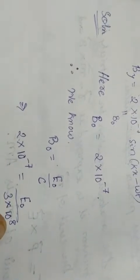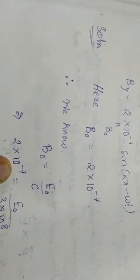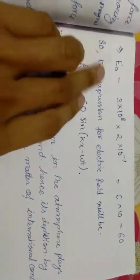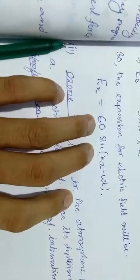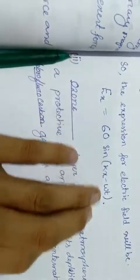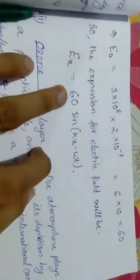So I represent E naught, E naught value multiply. E naught value is 60. E naught sin kx minus omega t.